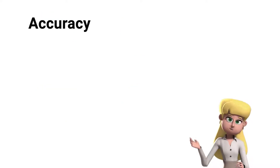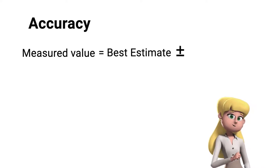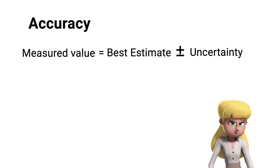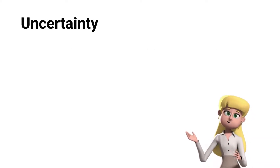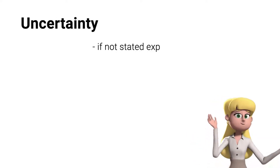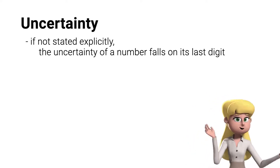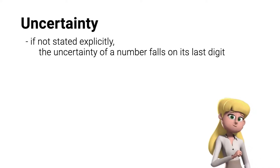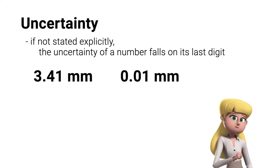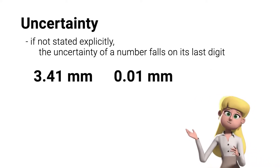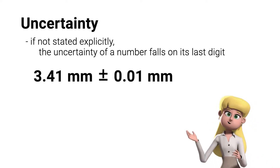In accuracy, we write the measured value by placing our best estimate number, the symbol plus or minus, and a second number indicating the uncertainty of the measurement. In many cases, the uncertainty of a number is not stated explicitly. If this happens, the uncertainty falls on its last digit. For example, a measurement of 3.41 mm has an uncertainty of 0.01 mm, and it is written as 3.41 mm ± 0.01 mm.